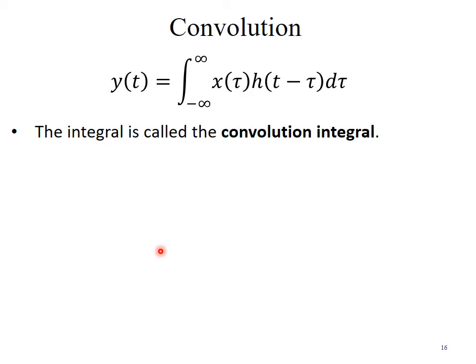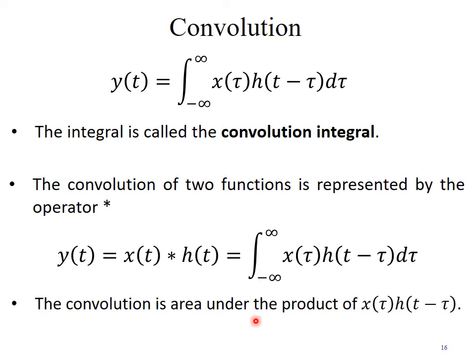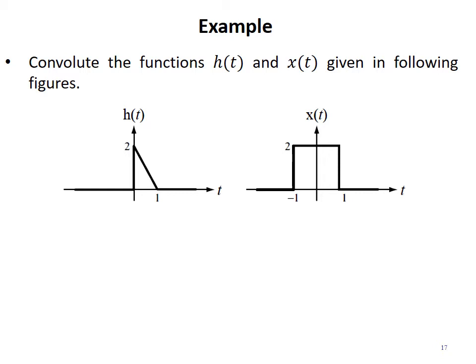This integral is called the convolution integral, one of the most popular ways to find the system response. The convolution operation is represented by the asterisk symbol: y(t) = x(t) * h(t), which equals the integral from minus infinity to infinity of x(tau) times h(t - tau) d tau. Convolution is essentially the area under the product of x(tau) and h(t - tau) for different values of t.